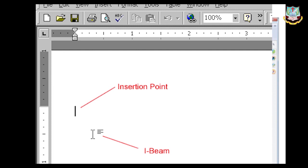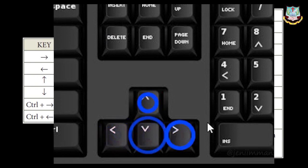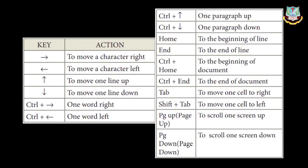Moving within a document: use arrow keys — left, right, up, down — to move one character at a time. To move one word to the right, use Ctrl+Right Arrow; to move one word to the left, use Ctrl+Left Arrow. These are keyboard shortcut keys. In this chapter you will learn cut, copy, paste, and all editing options.